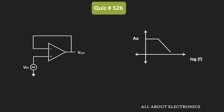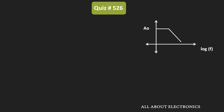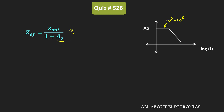The output impedance with feedback can be given as Zout divided by (1 + A0), where A0 is the open-loop gain of the op-amp. At low frequencies, the value of the gain will be very high — typically in the range of 10^5 to 10^6. So at low frequencies, A0 will be very high, and we can approximately say that Zof equals Zout divided by A0. Since A0 is very high, the value of Zof will be very low.